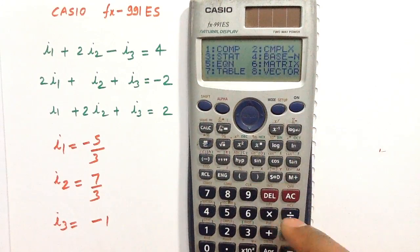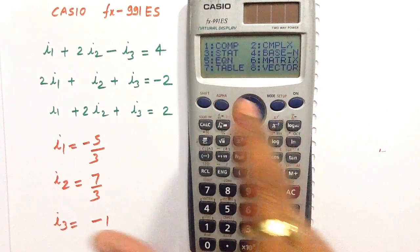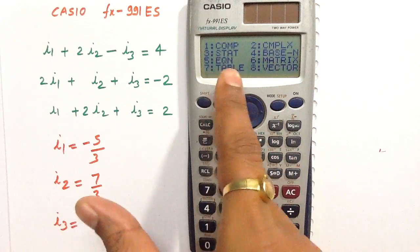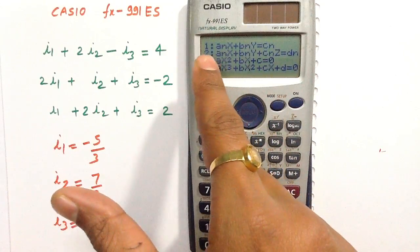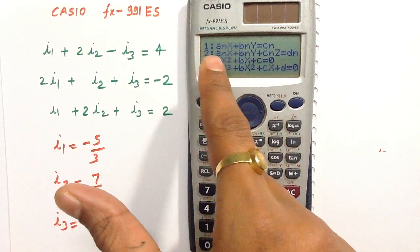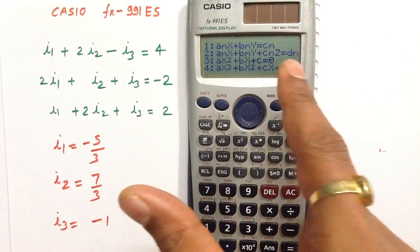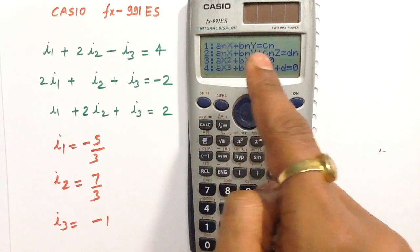Press the button mode, then press the button 5 where equation is written, then press the button 2 because button 2 means there are 3 unknowns x, y, and z.